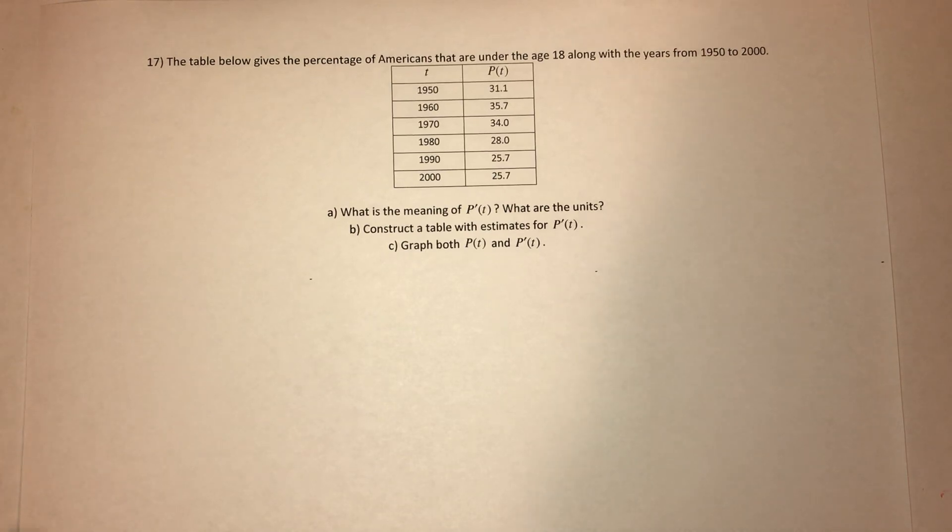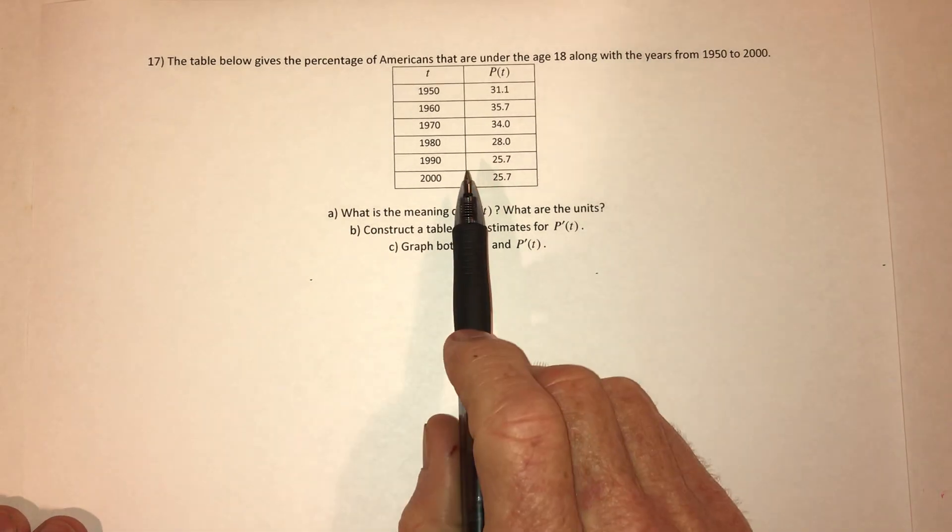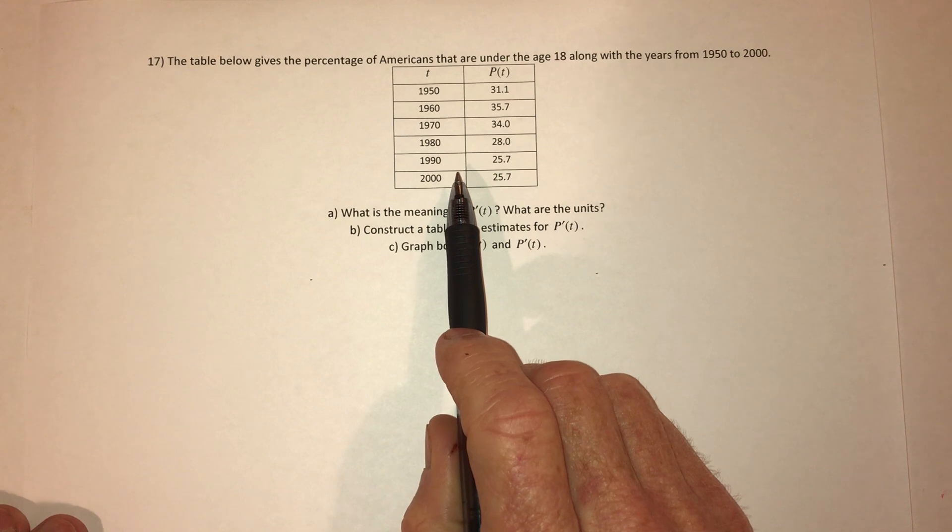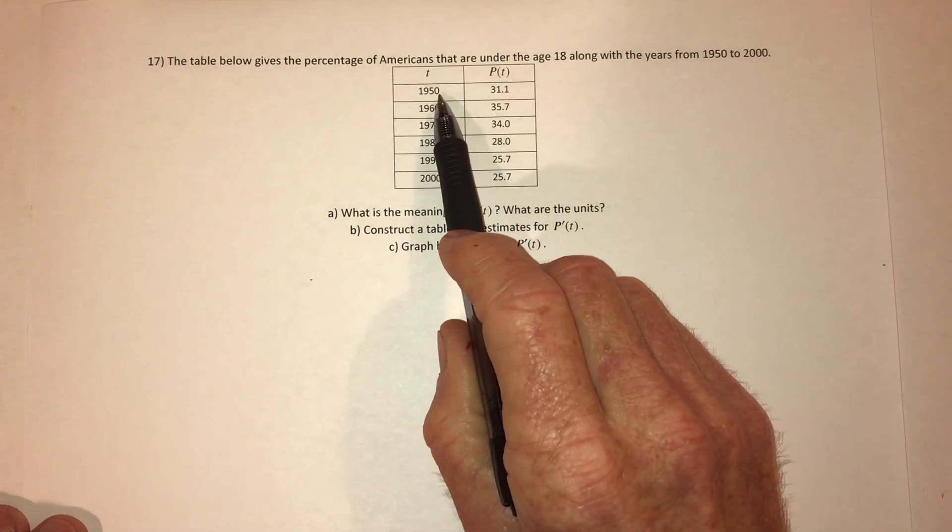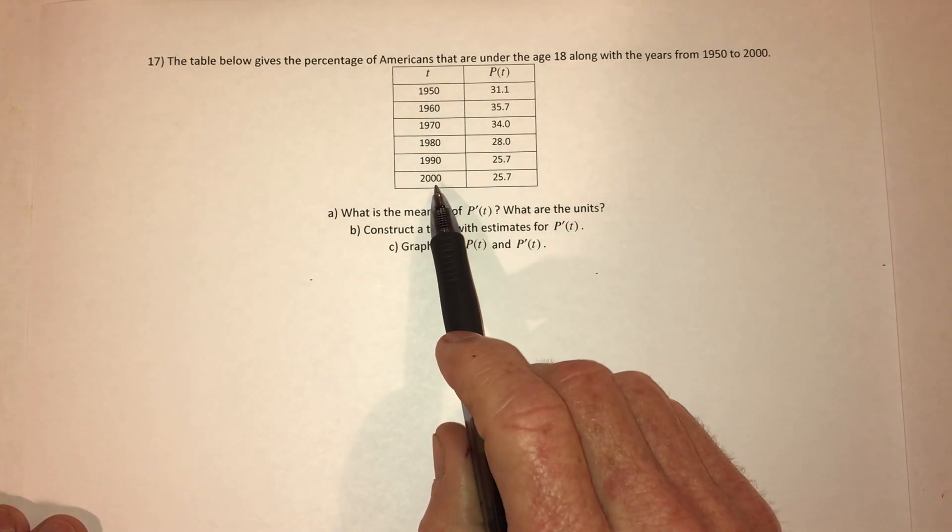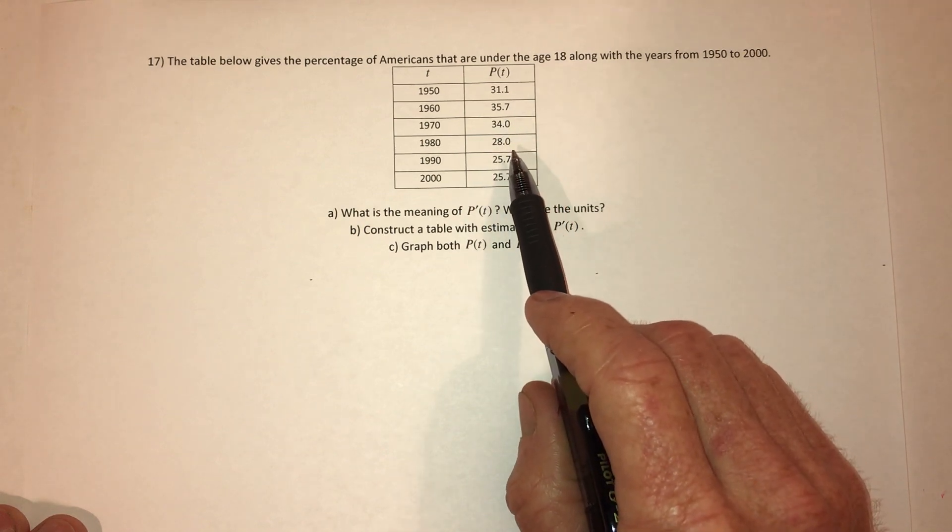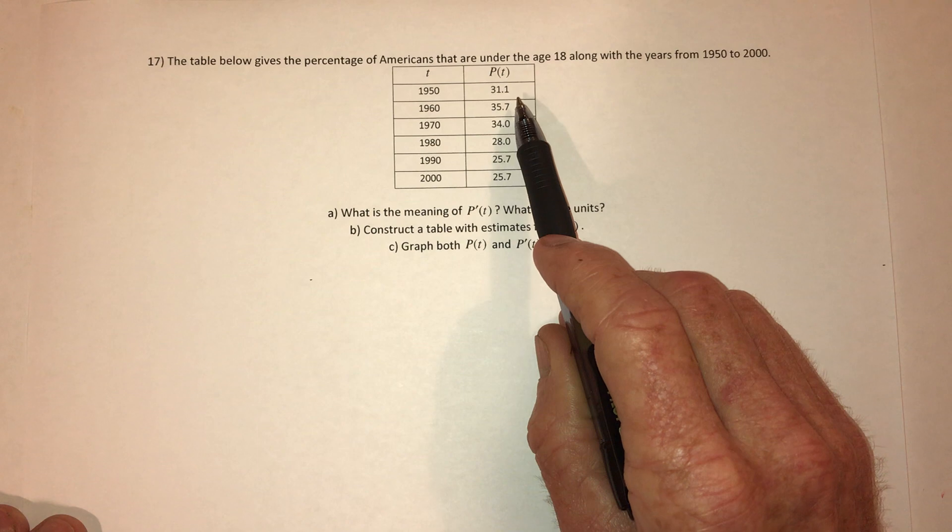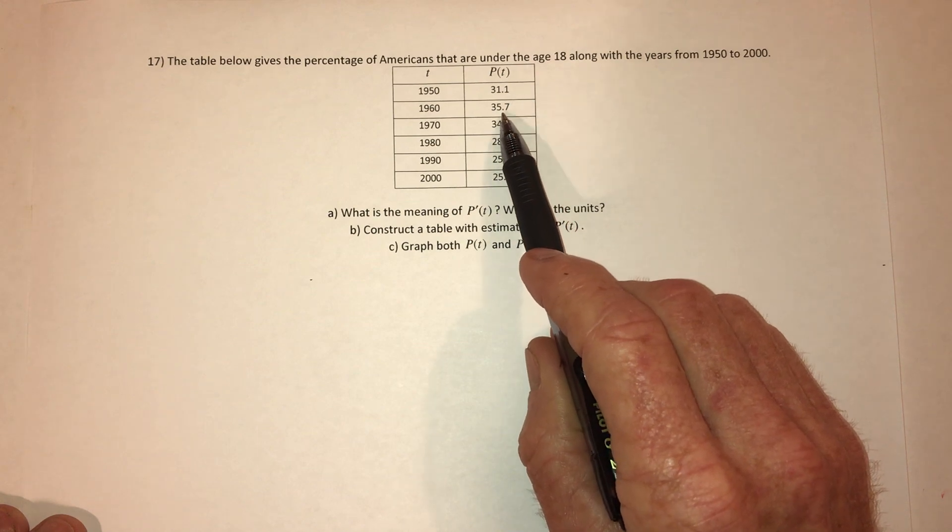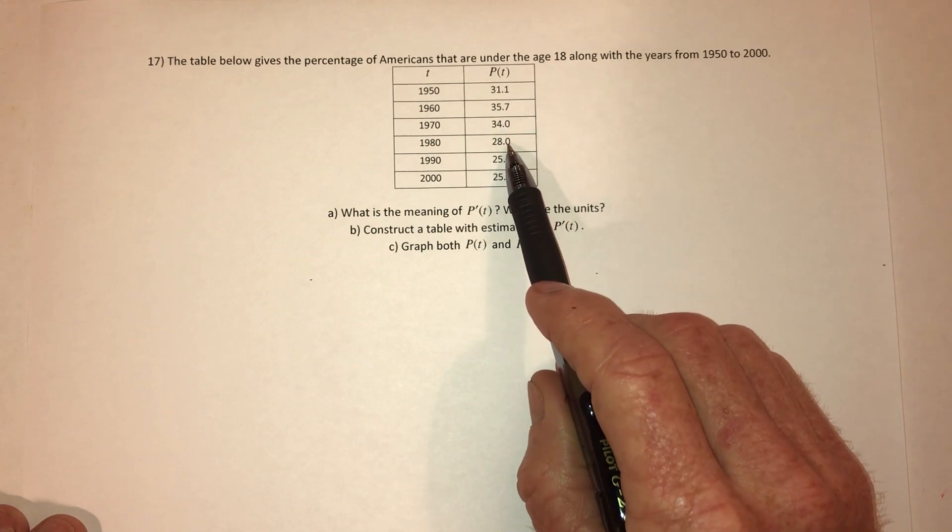So instead of being given a function, sometimes you'll be given a table of values that represent that function. So these are the years, the 1950s up to the year 2000. Here are the percentages of Americans under the age of 18, so how many young people. And you can see it sort of peaks right there and then starts to get smaller.